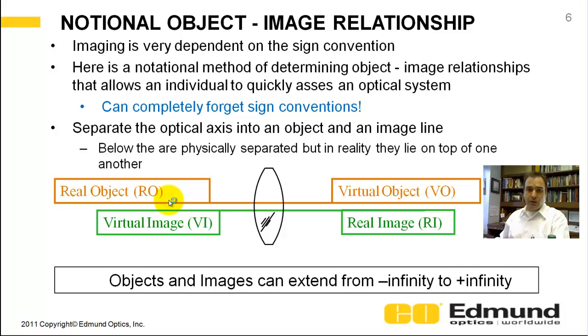Your object on the left is a real object. On the right is a virtual object. I'll be going to know in detail what those are. Your image, also on the same axes, to the left is a virtual, and to the right is a real.